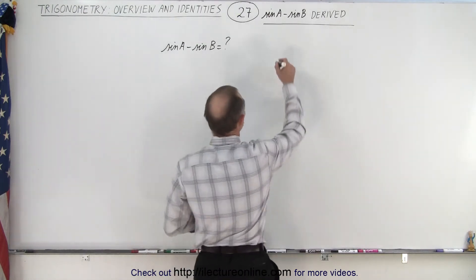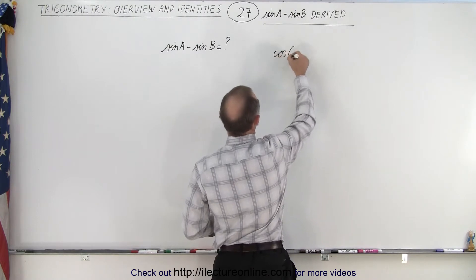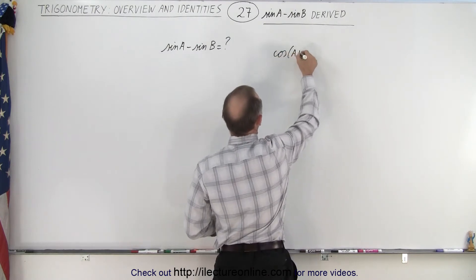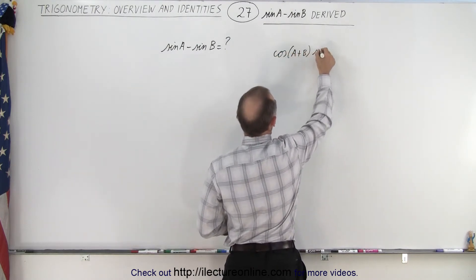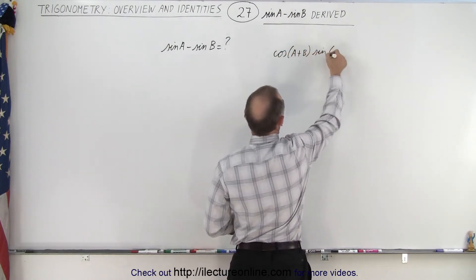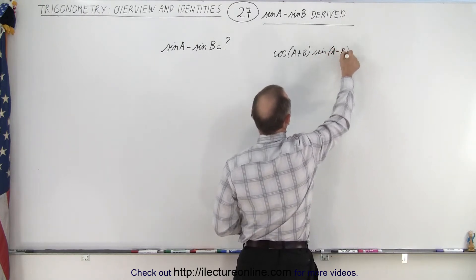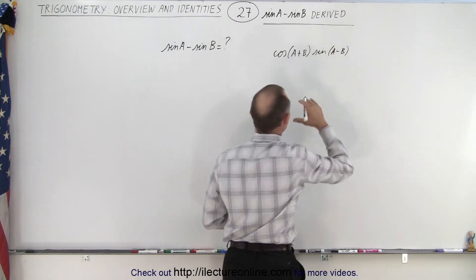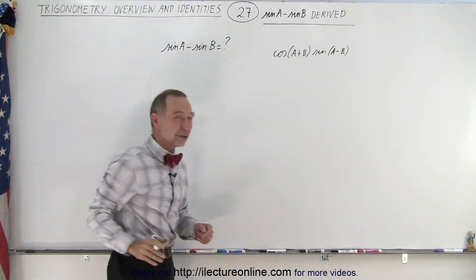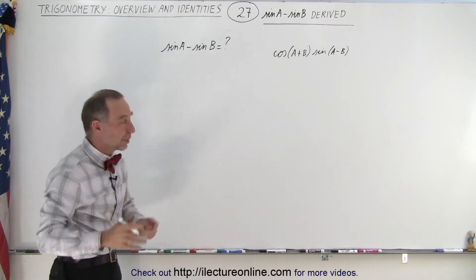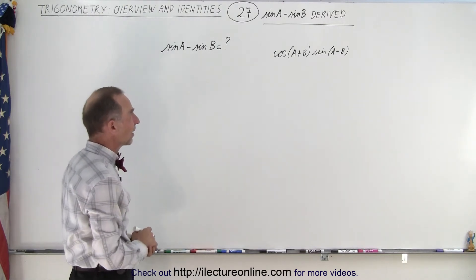We're going to start with the cosine of a plus b multiplied times the sine of a minus b. By working this out we'll get some expression that's really close, and we'll manipulate it to get it to be exactly the same.